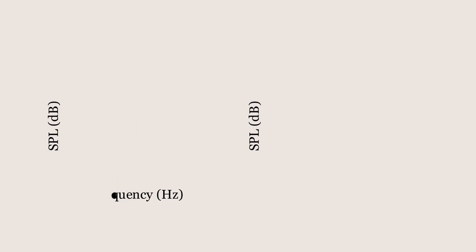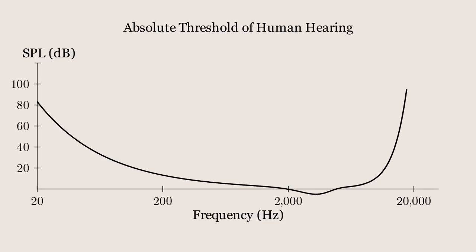Now let's go back to the absolute threshold of human hearing and see a graphical depiction of a tonal masker. Everything above the line is audible. Imagine playing a tone at 1000 Hz and 60 dB, represented by this X on the graph. It has been experimentally determined that a tone such as this one would completely mask all frequencies within this red cone. Notice that this tone can block frequencies that are rather far away, so long as they are quiet enough. This red cone is the local threshold of this particular tone masker. It can then be overlaid on the original threshold graph to create a new global graph of human audible frequencies when a 1000 Hz tone is being played at 60 dB. Of course, songs and other audio recordings usually have more than one tone, so this needs to be done for all the tone and noise maskers within a recording. To do this, the full frequency content of the intended recording must be extracted.